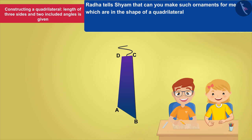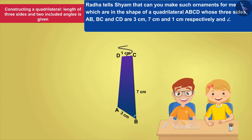Radha tells Shyam, can you make such ornaments for me which are in the shape of a quadrilateral ABCD, whose three sides AB, BC and CD are 3, 7 and 1 cm respectively, and angle B equals 60 degrees and angle C equals 90 degrees.